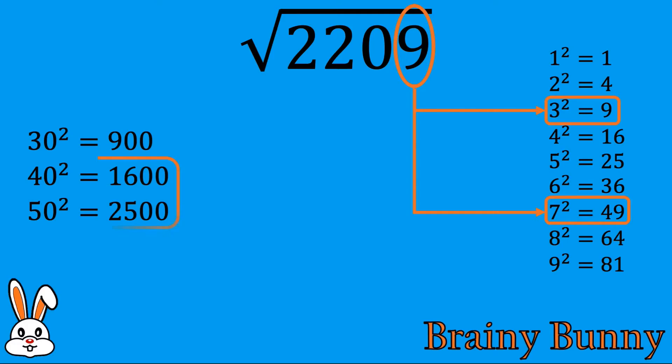2209 falls between 40 squared and 50 squared. Combining the above two findings, we know that our answer must be between 40 and 50. In our case, 43 or 47.